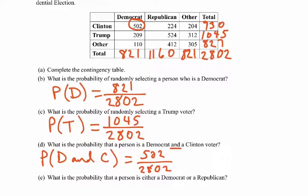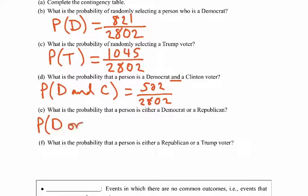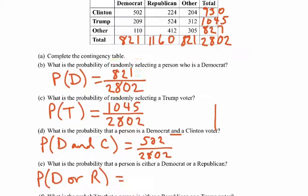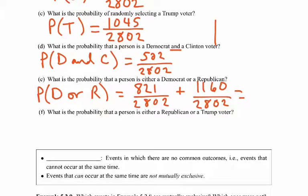What is the probability of selecting a person who is a Democrat or a Republican? That means Democrat only, Republican only, or both. However, in this survey you cannot be both — you're either a Democrat or a Republican. The total number of Democrats is 821 and the total number of Republicans is 1,160, giving 821 plus 1,160 equals 1,981 out of 2,802.